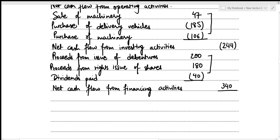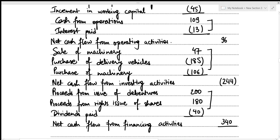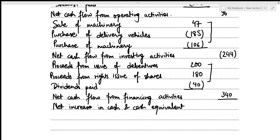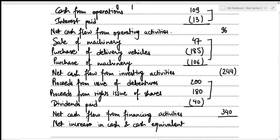Now we figure out the net increase in cash and cash equivalents. There is only one negative section and the positives are higher, so there is a net increase. Net increase = 96 − 244 + 340 = 192,000.